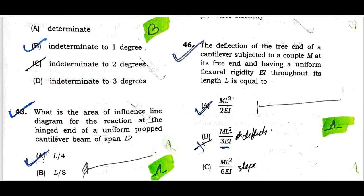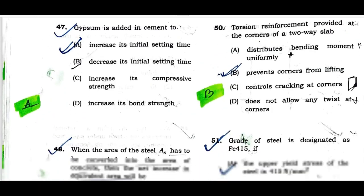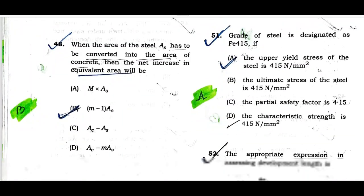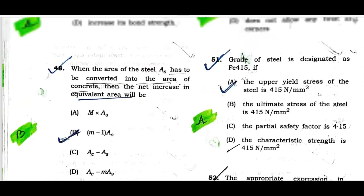Question number forty-six: The deflection of the free end of a cantilever subjected to a couple M at its free end with uniform flexural rigidity EI throughout its length L is equal to ML² by 2EI. Question number forty-seven: Gypsum is added to cement to increase its initial setting time. Option A is correct. Question number forty-eight: When the area of steel As is converted to equivalent area of concrete, the net increase in equivalent area will be (m − 1)·A_steel. Option B is correct.